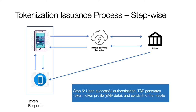One important nuance: in the flow described, the TSP generates the token number only after both the card and the customer are authenticated. However, in some schemes like Visa, immediately after the card is authenticated the TSP generates the token number and provisions it in an inactive status. These nitty-gritties vary by scheme, but the baseline understanding is that once the card and customer are authenticated, the token and associated data are generated by the TSP.